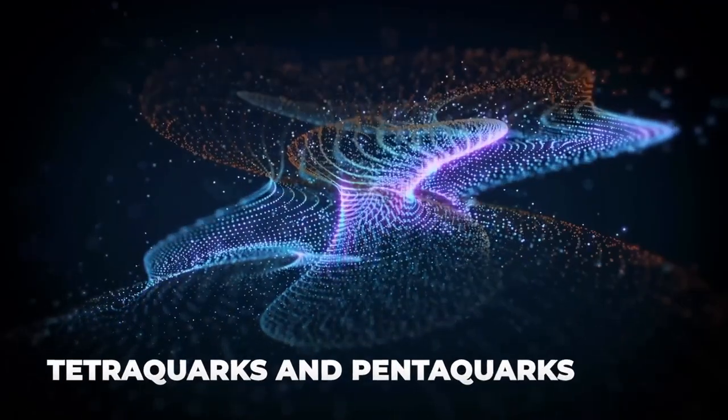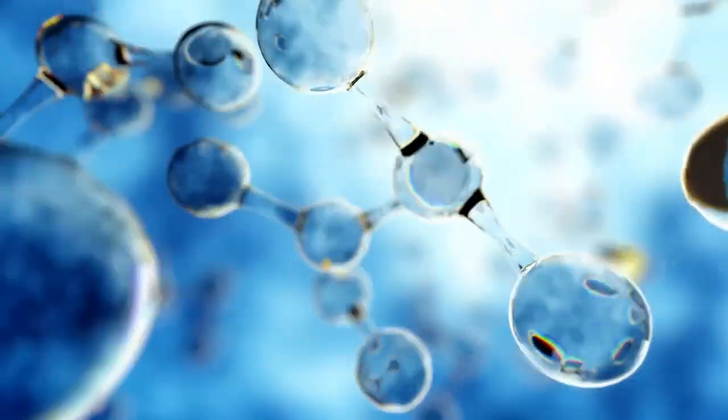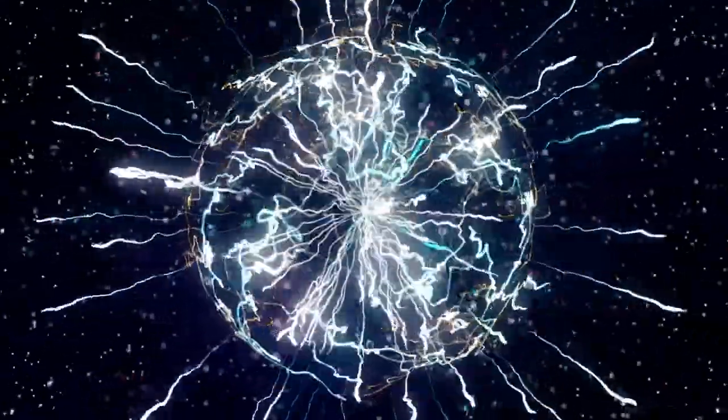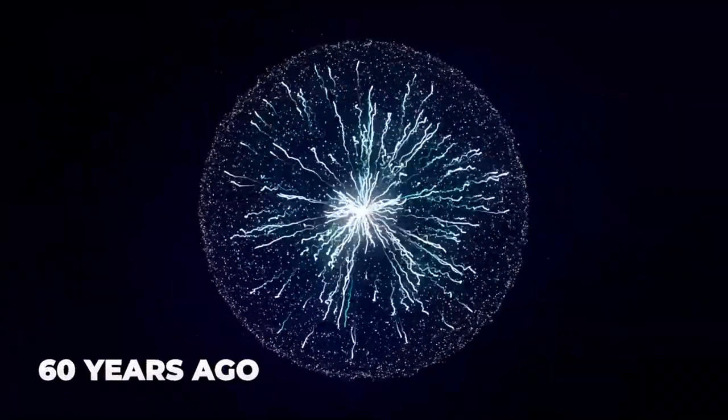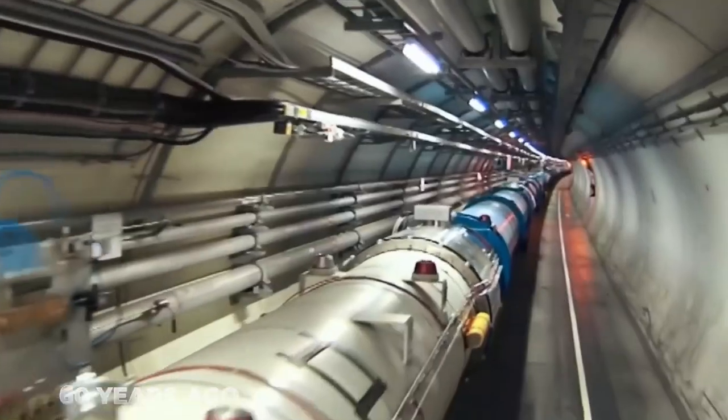Tetraquarks and pentaquarks, sometimes known as four and five quark particles, are only occasionally formed when combined. Although theorists predicted these unusual hadrons some 60 years ago, it has only been in the last 20 years that LHC and other laboratories have detected them.